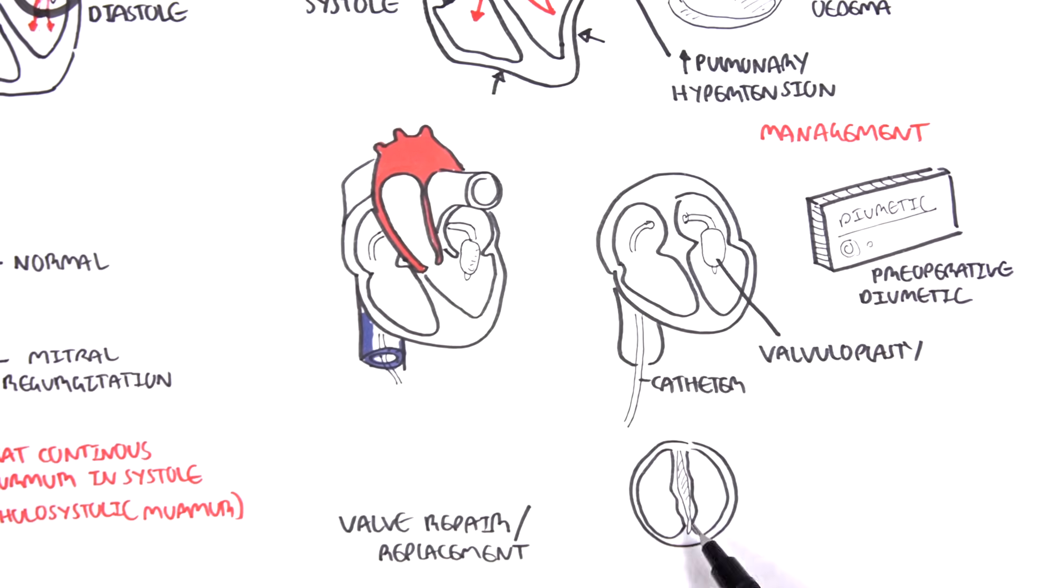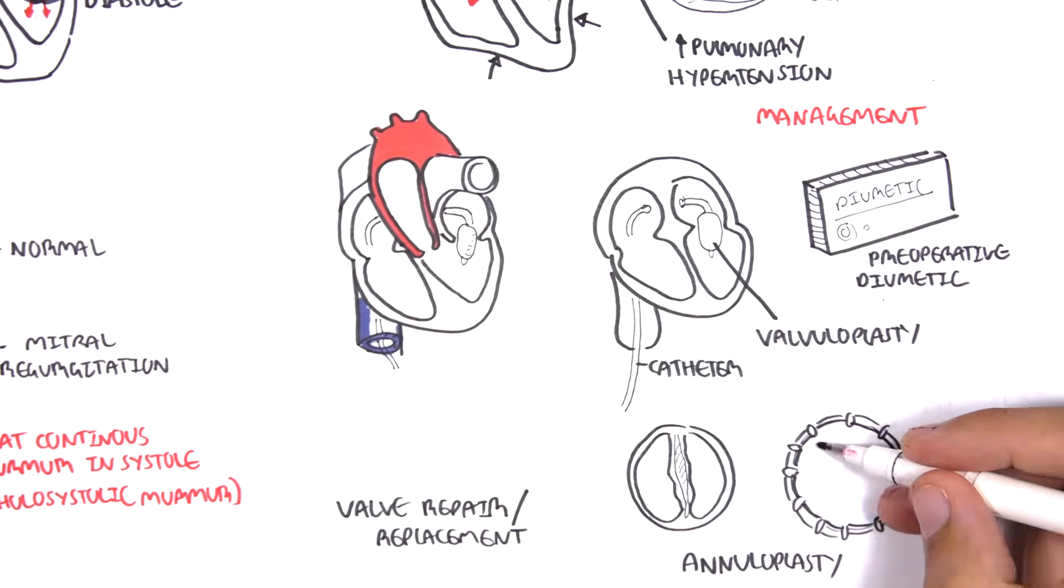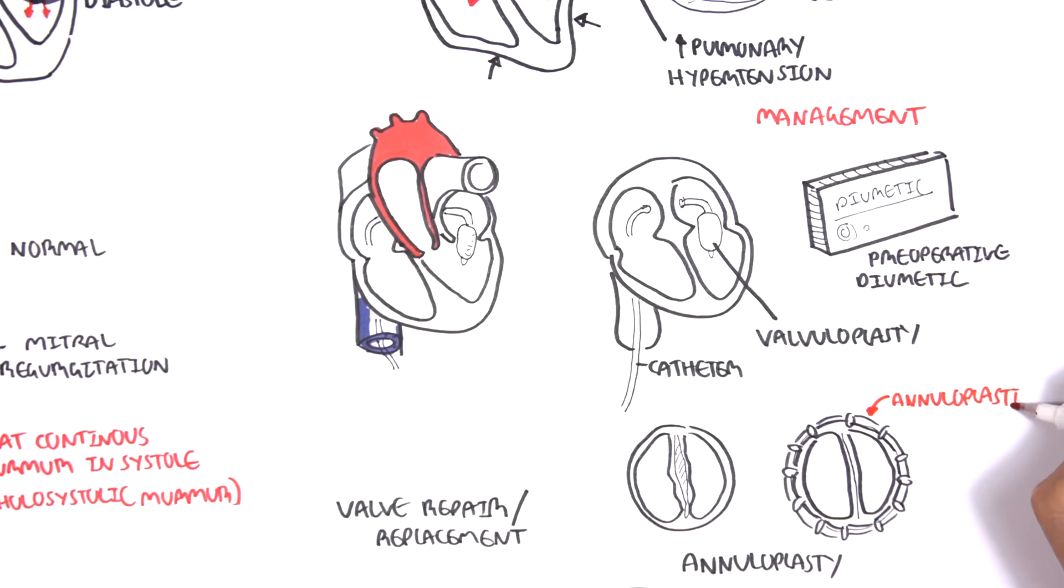Anuloplasty can be performed, which is essentially when you insert an anuloplastic ring around the mitral valve to support the mitral valve.